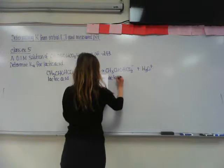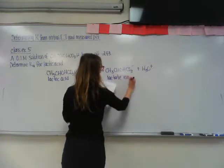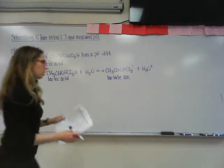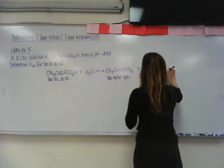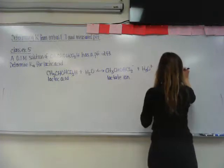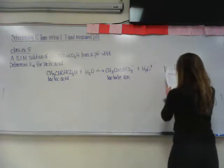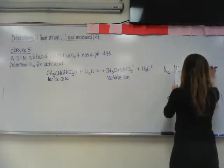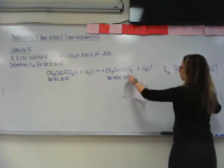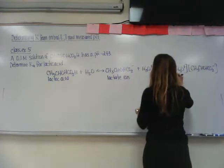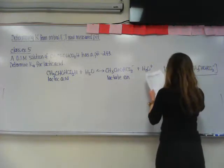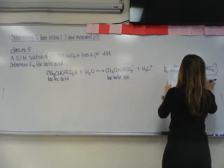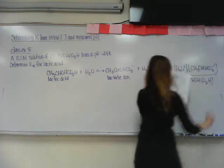It's going to give you the lactate ion and a hydronium ion. So we've got our Ka equals the concentration of the hydronium ion times this ion here, your lactate ion, and you divide it by the concentration of lactic acid, which looks like this.